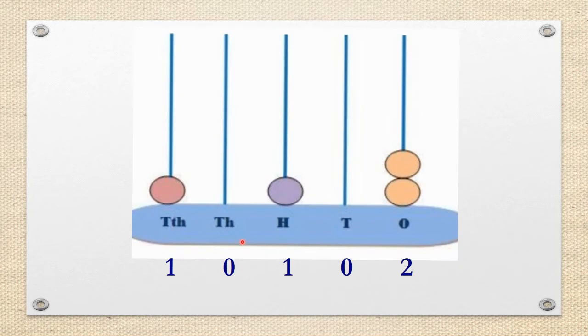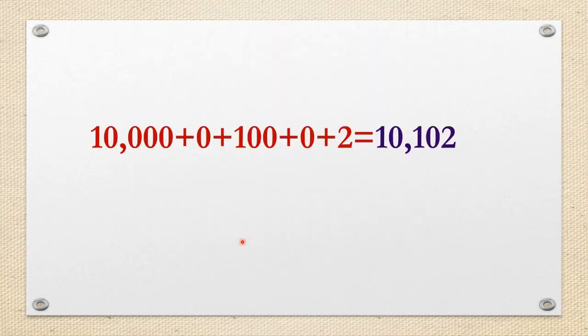One more example. In 1's place there are 2 beads, so it is 2. In 10's place there are no beads, so it is 0. Next, 1 bead in 100's place, so it is 100. Now, 10,000 plus 0 plus 100 plus 0 plus 2. When added together, we get the number 10,102.